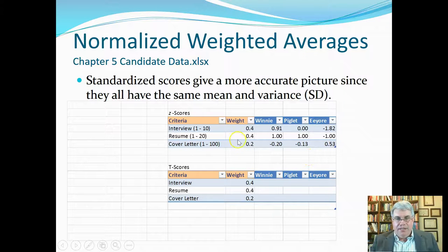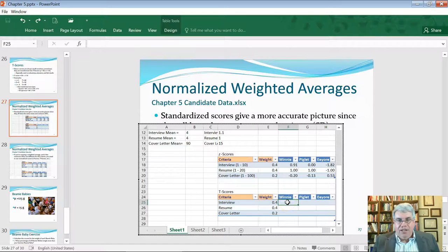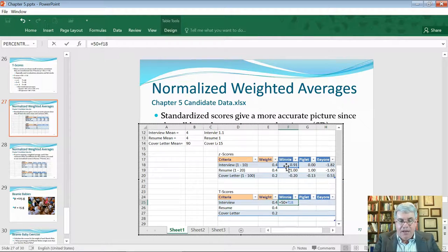So, we've got some weights here. We want the interview and the resume to count for about 40%, and the cover letter for 0.2. And now, let's convert these to T-scores before we do the weighted average. So, I'm going to put, for Winnie, let's calculate a T-score for Winnie. The formula that we're going to use is equal 50. Then, I'm going to do plus, and then Winnie's Z-score is F18, F18. I'm going to times that by 10, and I will press enter.